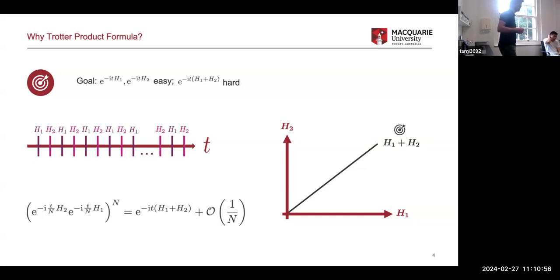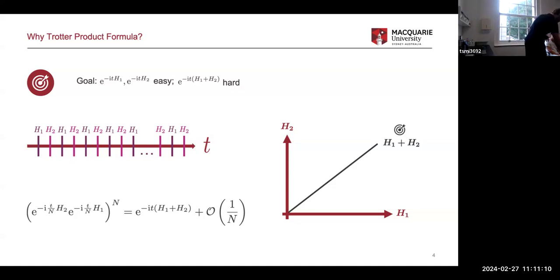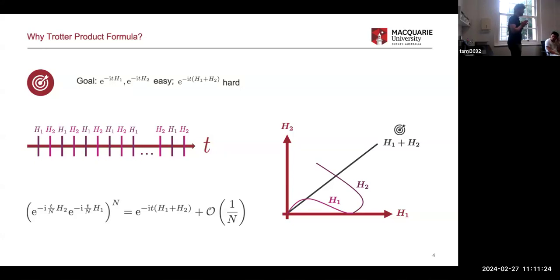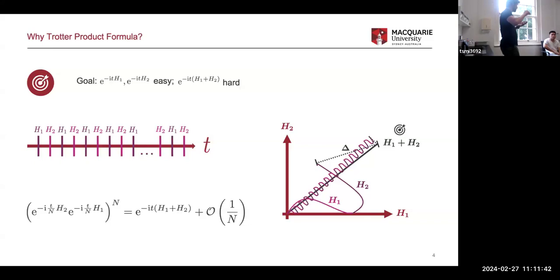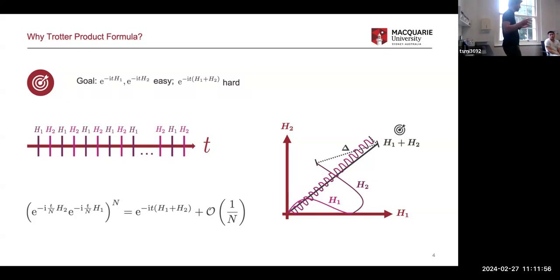The geometric idea is like this: you want to go to the supermarket — let's say the supermarket is at H1 plus H2 — but you can only go in the H1 direction, and you can only go in the H2 direction, and you can't go on that straight line. If you go in H1 direction first and then H2 direction, you end up somewhere else due to the curvature of the space. But if you split the time evolution into very small pieces, then because each piece is so small it doesn't see the curvature much — your space is locally flat — and you end up very close to where you wanted to be. That's the geometric idea behind the Trotter product formula.